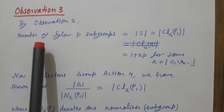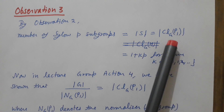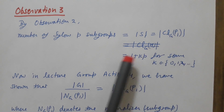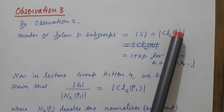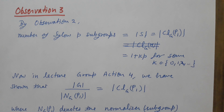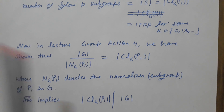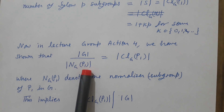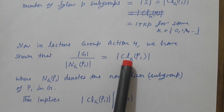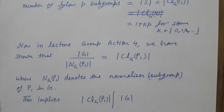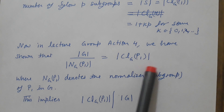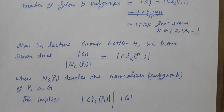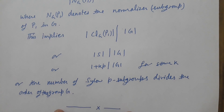By observation two, the number of Sylow p-subgroups equals |S|, which is the order of the conjugacy class of P1 — equal to 1 + kp. From lecture 'Group Action 4', the order of G divided by the order of the normalizer of P1 equals the size of the conjugacy class of P1. This means |S| divides |G|, so 1 + kp divides the order of G, proving that the number of Sylow p-subgroups divides |G|. Thank you very much.